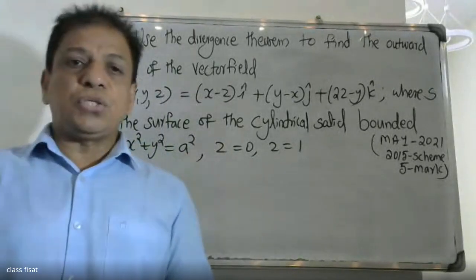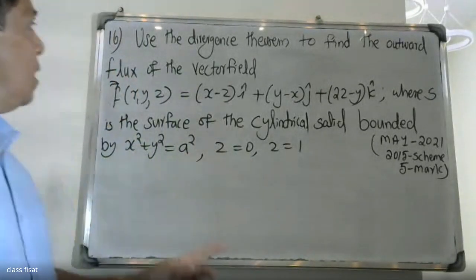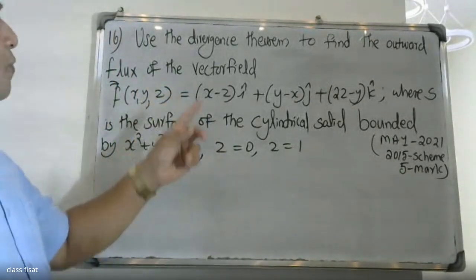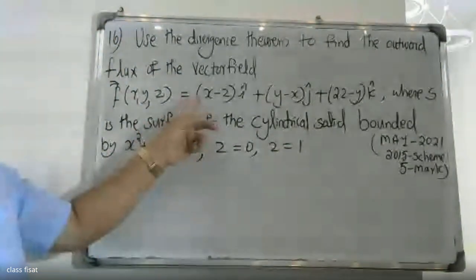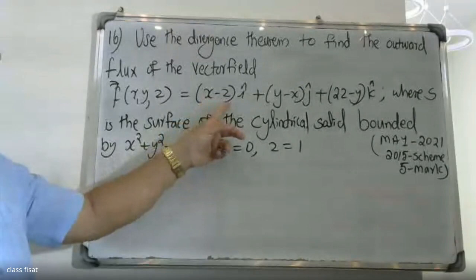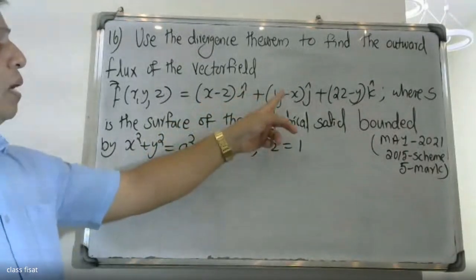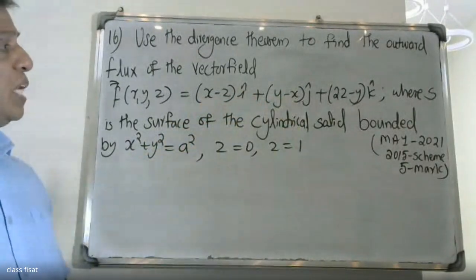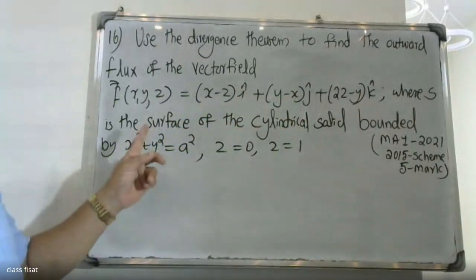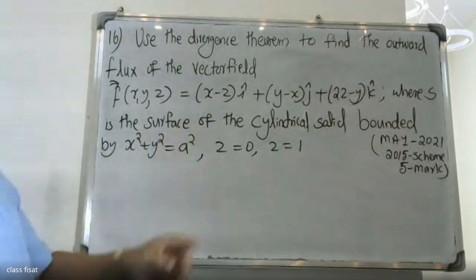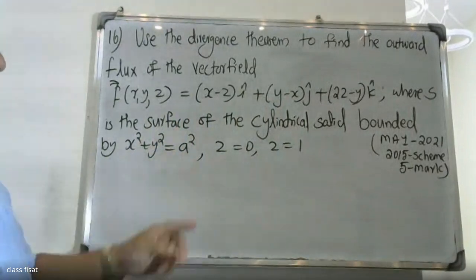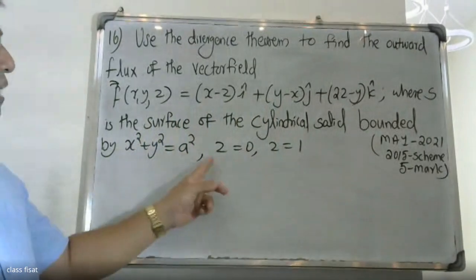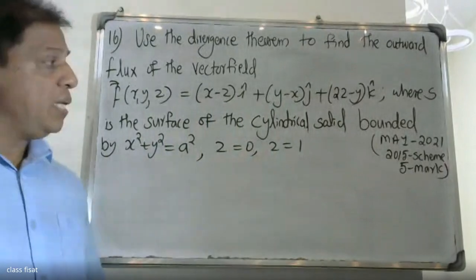Good morning, students. The question: use the divergence theorem to find the flux of the vector field F of x, y, z — (x minus y) i plus (y minus x) j plus (2z minus y) k — where S is the surface of the cylindrical solid bounded by x squared plus y squared equal to s squared, z equal to 0, z equal to 1.